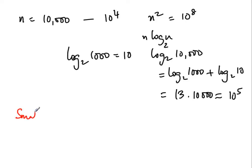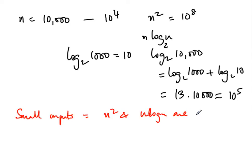For small inputs, n squared and n log n are equivalent from the user's perspective. Of course they are not equivalent as algorithms, but from a user's point of view you will not see a real difference because both terminate almost instantly.